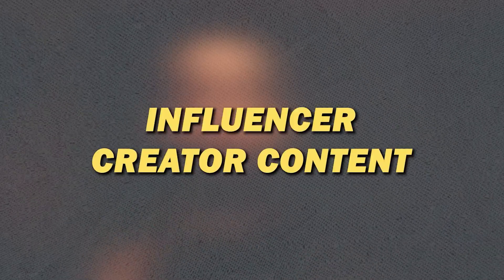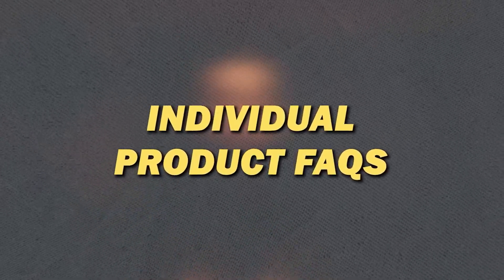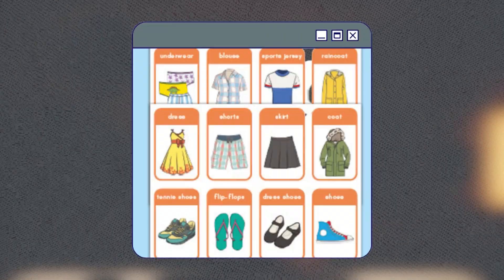Shopify actually has a really good case study with Smash and Tees. There are three ways they're using meta-objects: influencer-created content, individual product FAQs, and logic-based collection banners. One of the main benefits is they don't have to go into the designer and customize the theme. They just go to their content section, add new content, and it automatically appears on the website — similar to how products work in the back end.